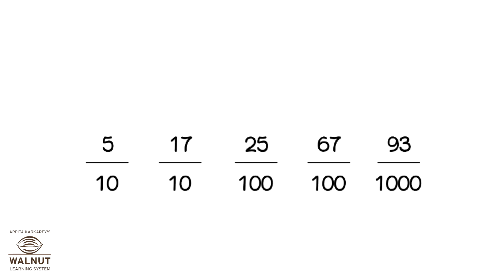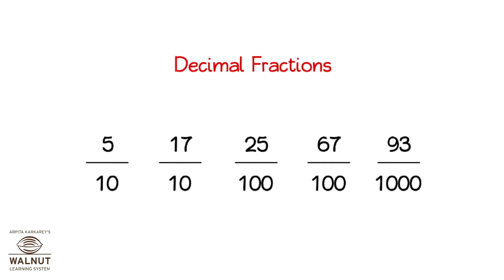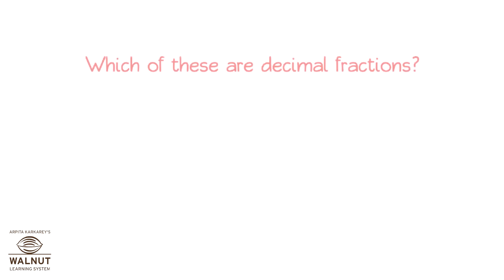Look at all these fractions. What special thing do you see here? These are fractions where the denominator is 10, 100, 1000, 10,000, or some such number with one and many zeros. All these fractions have a special name — they are called decimal fractions.